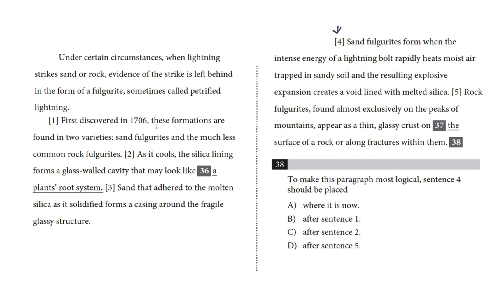First discovered in 1706, these formations are found in two varieties, sand fulgurites and the much less common rock fulgurites. As it cools, the silica lining forms a glass-walled cavity that may look like a plant's root system. Sand that adhered to the molten silica as it solidified forms a casing around the fragile, glassy structure.